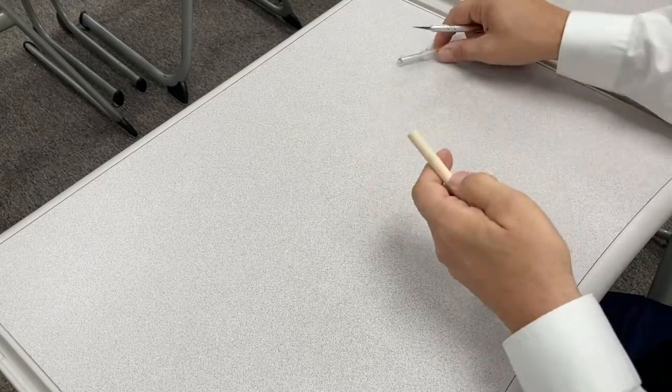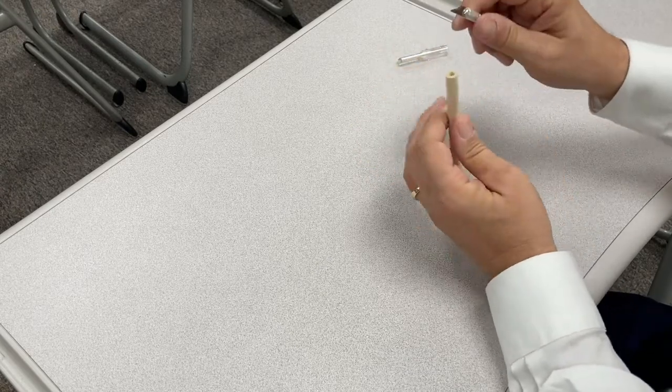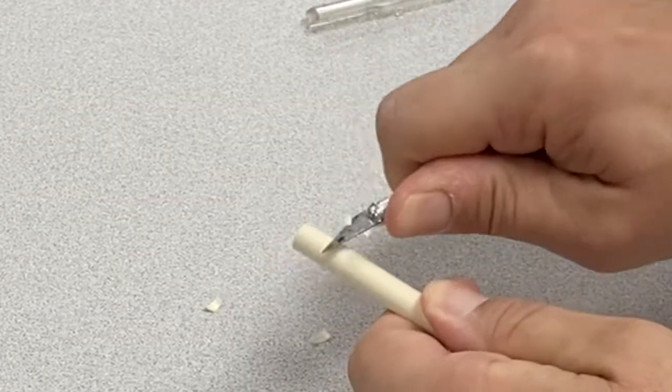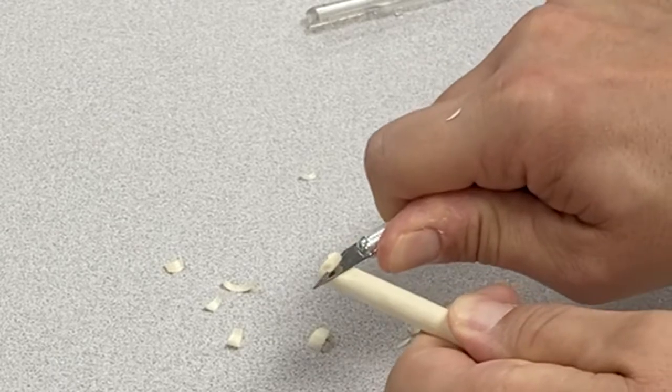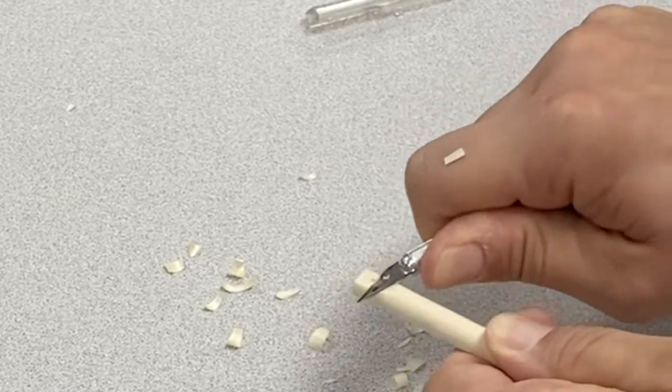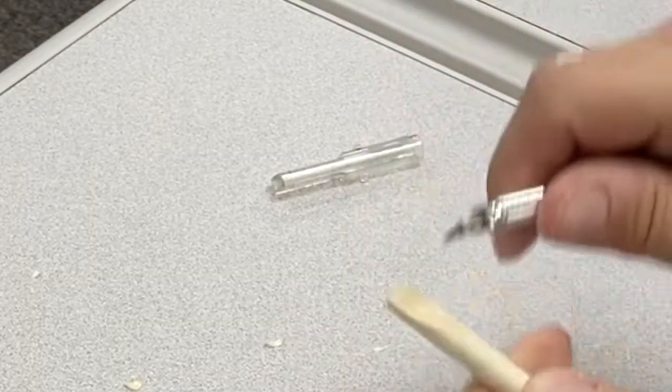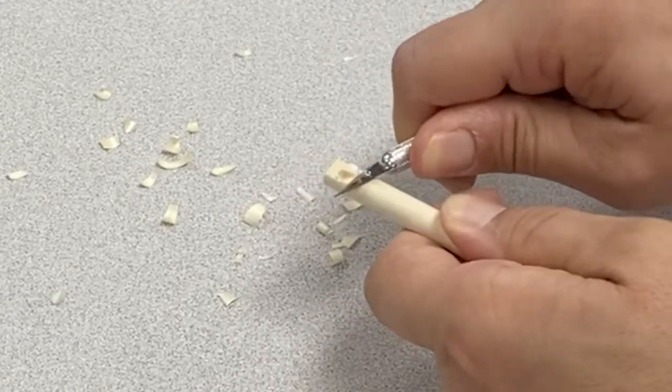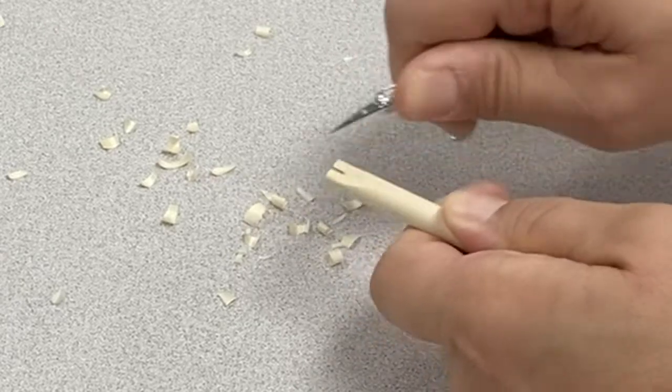Then you're going to take your exacto knife and you're going to carve this end, the end with the hole, into a tip. So the first thing you want to do is to start to slice thin little slices. And what you'll notice is that as I am doing this, I'm trying to keep all the shavings on the desk and you'll notice that I am carving really this one side of the reed flat. I'm getting closer to the hole and that's going to open up in just a moment. So as we keep taking thin little slices and I will tell you that thin is better than trying to slice off a whole lot of wood at once.